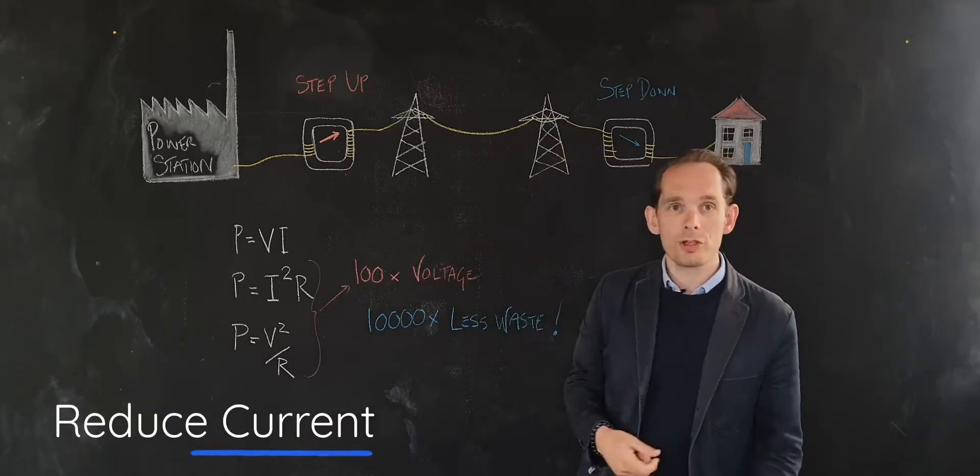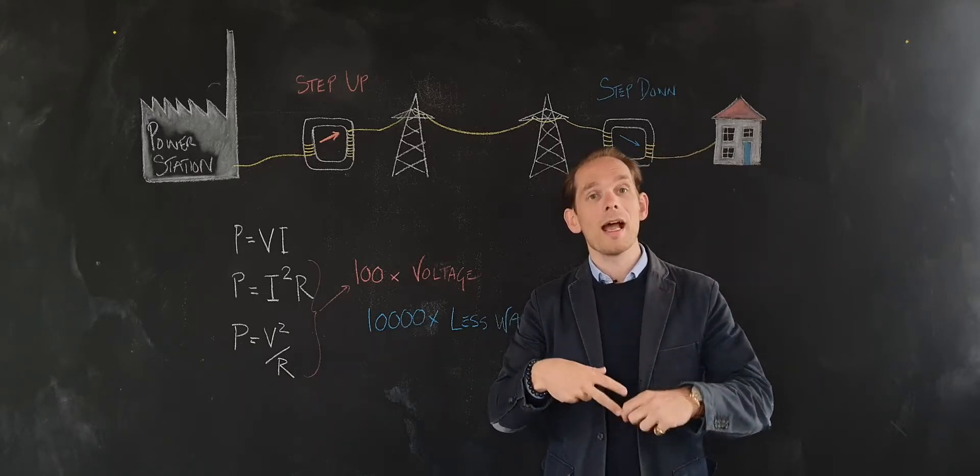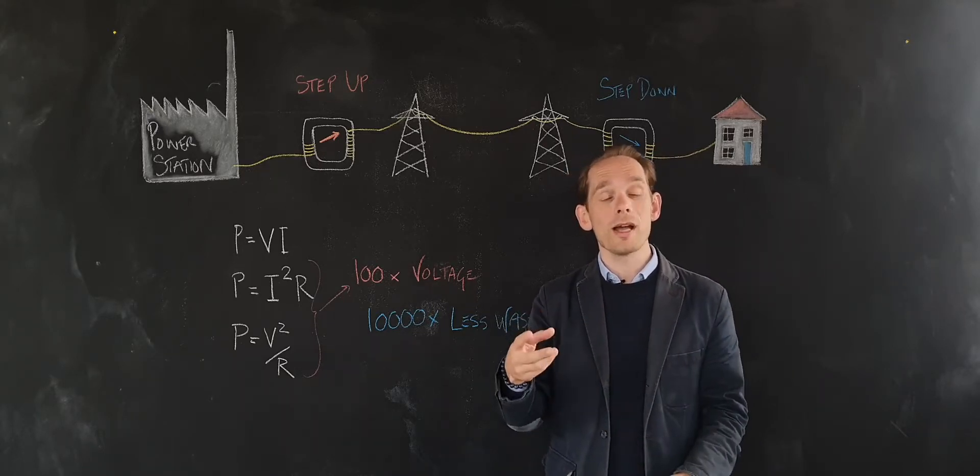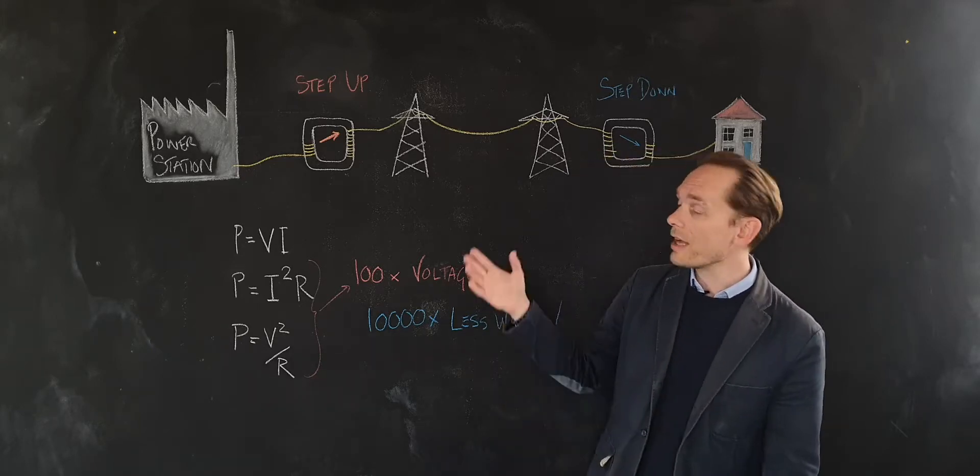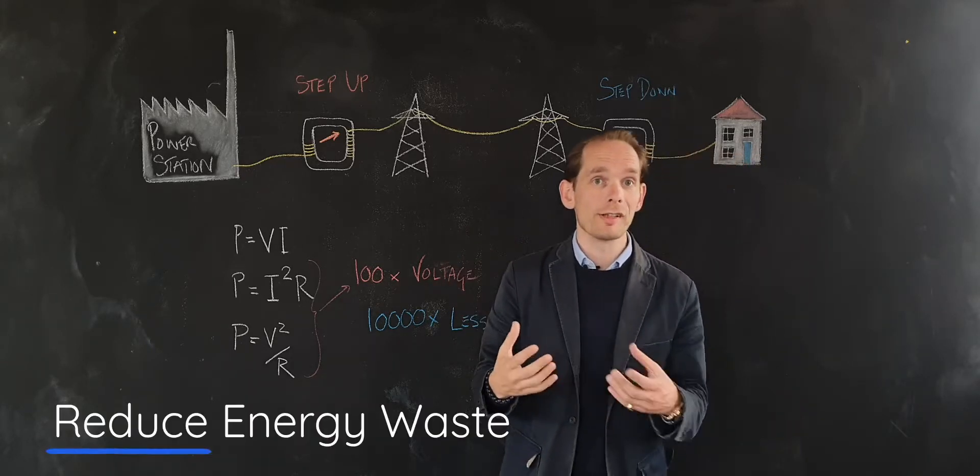So if we step the voltage up a hundred times, we step the current down a hundred times, and our energy loss is a hundred squared—a ten-thousandth of what it would have been otherwise. That's why we step up voltage: to reduce energy waste in the cables.